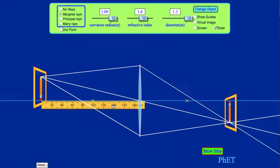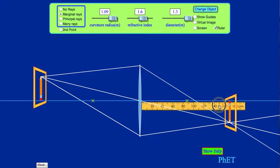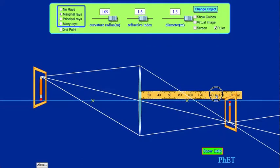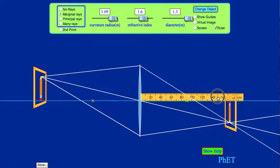I can take my object distance to be 190 and then I can take my ruler and move it to the other side and measure the image distance. I would need to record the distance from the center of the lens out to the image.